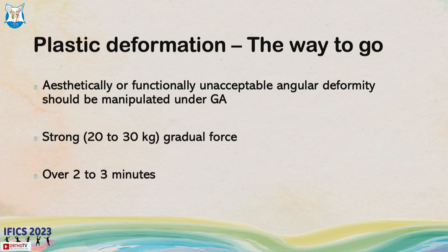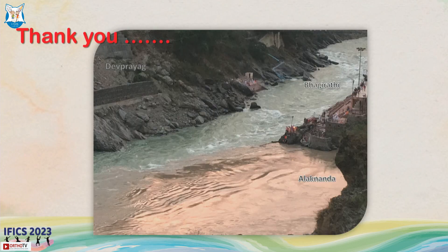In plastic deformation, an aesthetically or functionally unacceptable angular deformity should be manipulated under general anesthesia. Strong force — you will not be able to measure the exact amount, but it should be strong yet gentle so you don't want to break the bone, depending on the age of the child. It should be applied over a couple of minutes, and then the limb should be protected in a very well-modelled plaster.